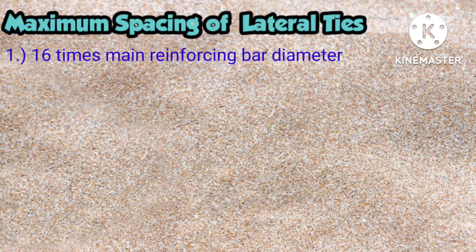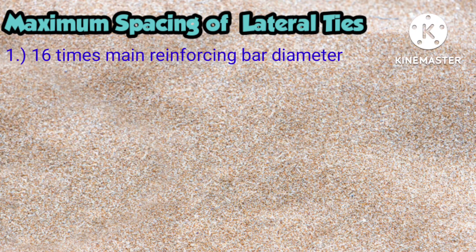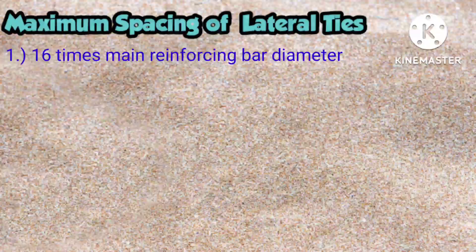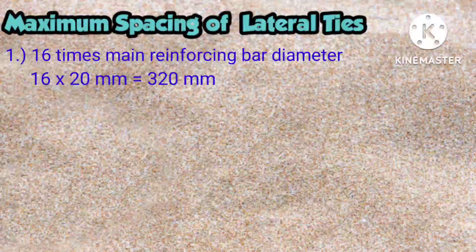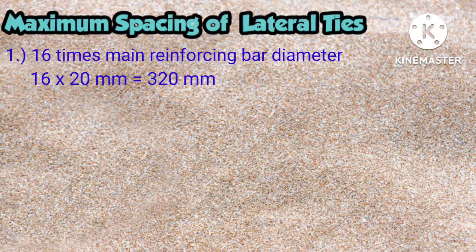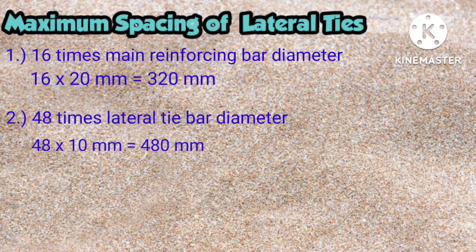First, we will find the value of 16 times the main reinforcing bar diameter. The main reinforcing bar is a 20mm bar, so 16 times 20 is equal to 320mm. Second, we will find the value of 48 times the lateral tie bar diameter. The size of the lateral tie is 10mm, so 48 times 10 is equal to 480mm.